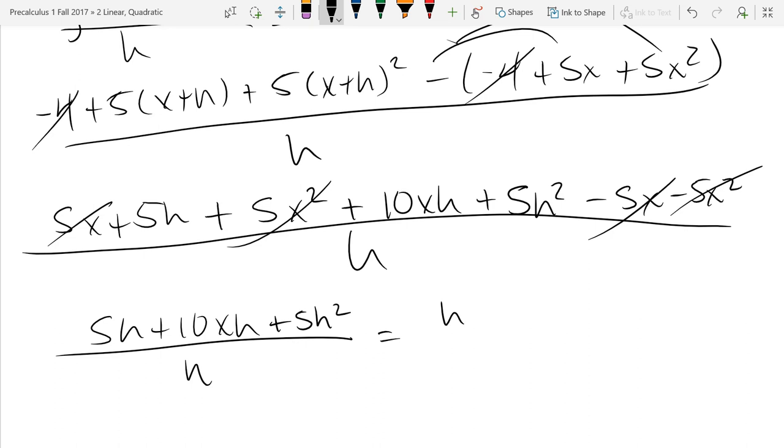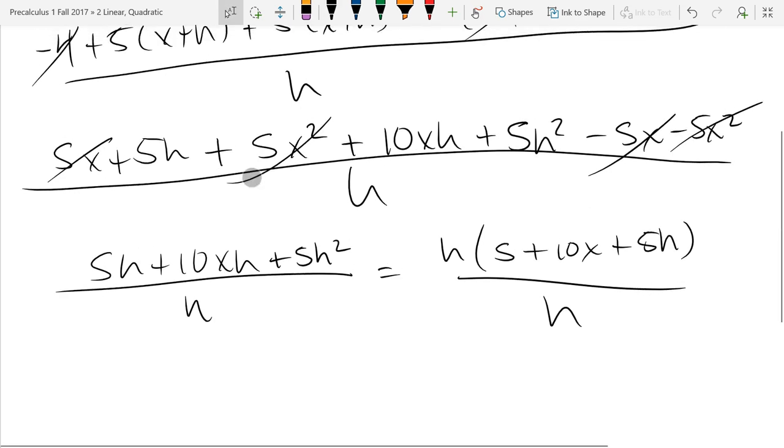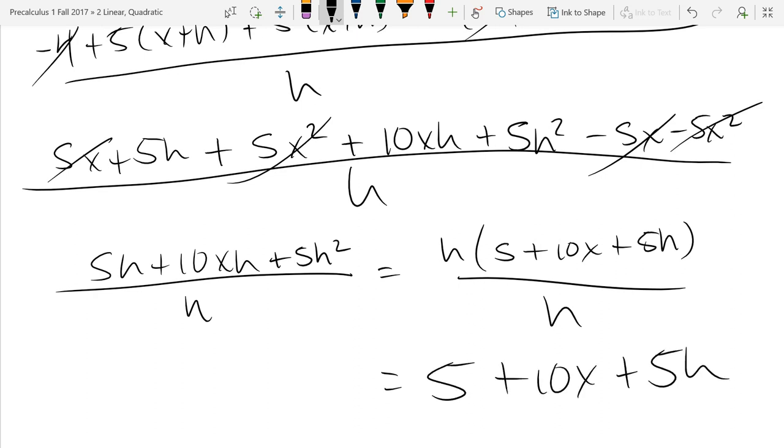And finally, we factor the h out. So we have 5 plus 10x plus 5h over h. Now, finally, these h's cancel, and we just have 5 plus 10x plus 5h.